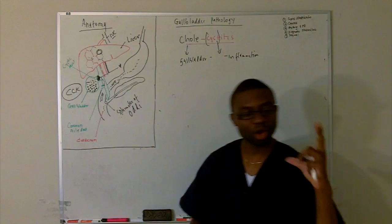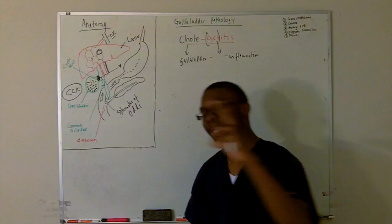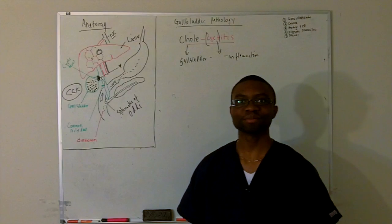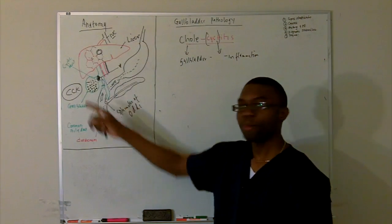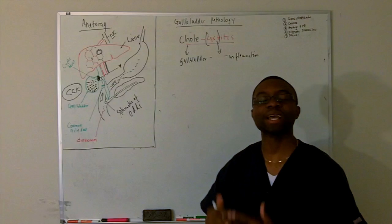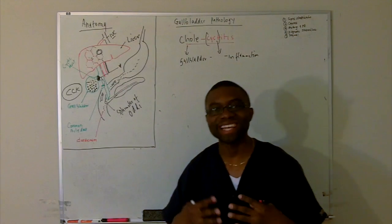Obstruction of the cystic duct. Now, here's the problem. Every time the gallbladder contracts, it's contracting against this little guy. He's contracting, he's contracting, he's contracting. But the problem is, the stone is stuck there. The stone is not falling out. Eventually the gallbladder starts to get what? Inflamed. It's the inflammation.